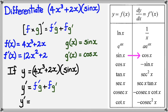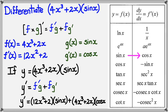f' is 12x² plus 2. So there's 12x² plus 2. g is sinx. So there's sinx. Plus f, which is 4x³ plus 2x. And of course, g'(x), which is cosx.